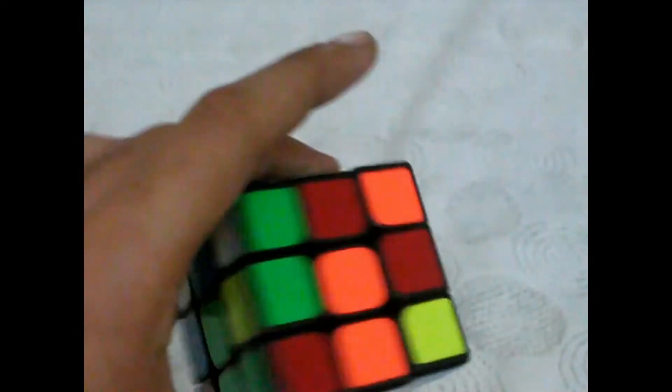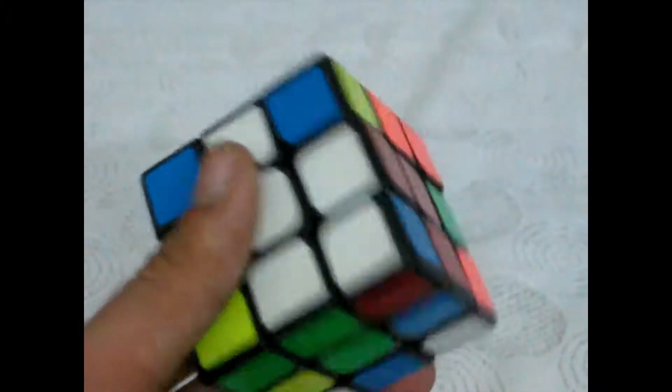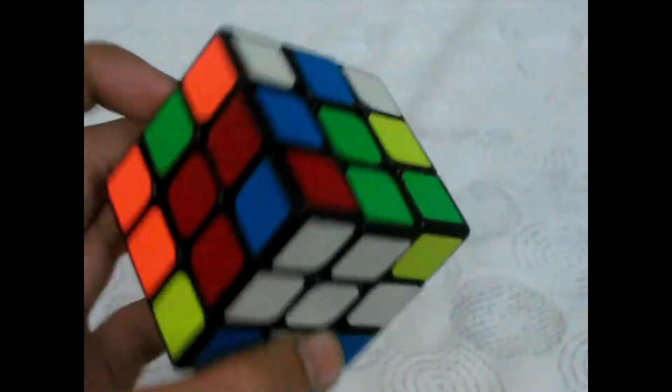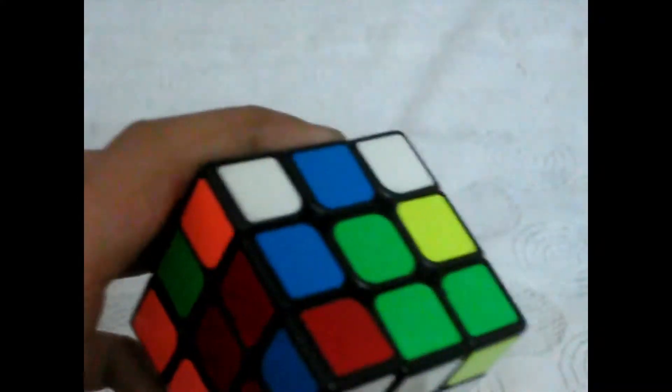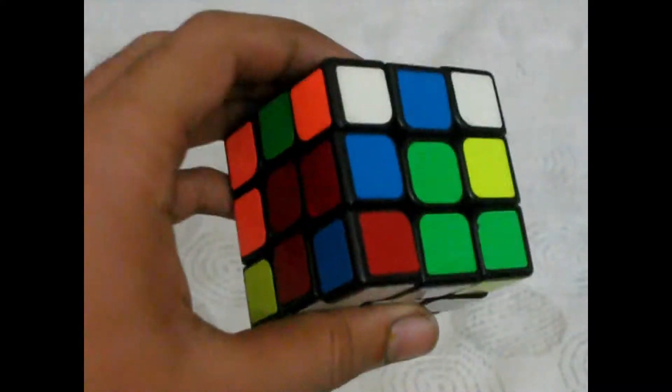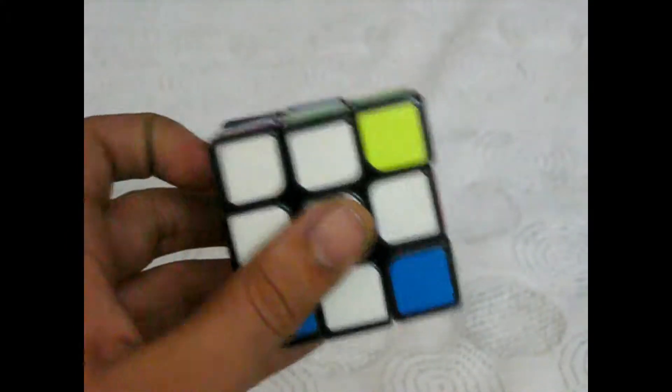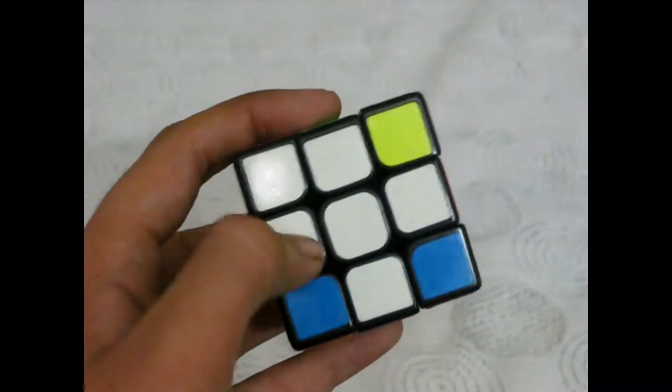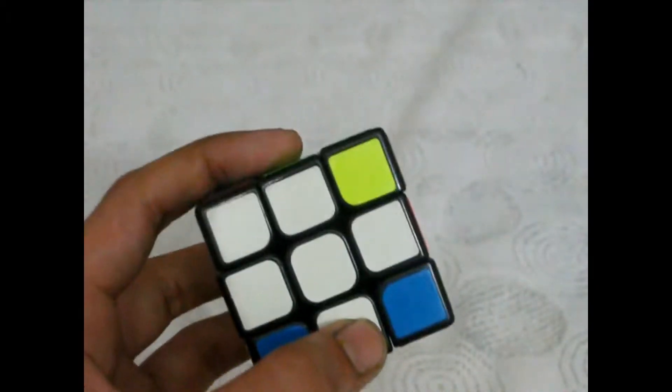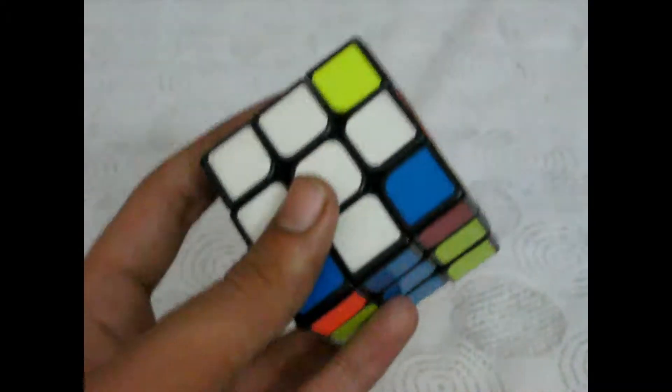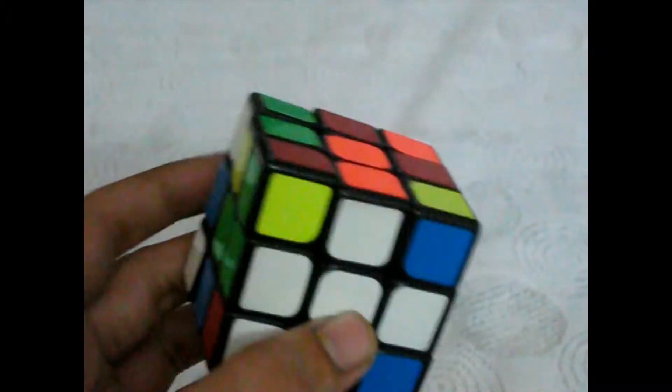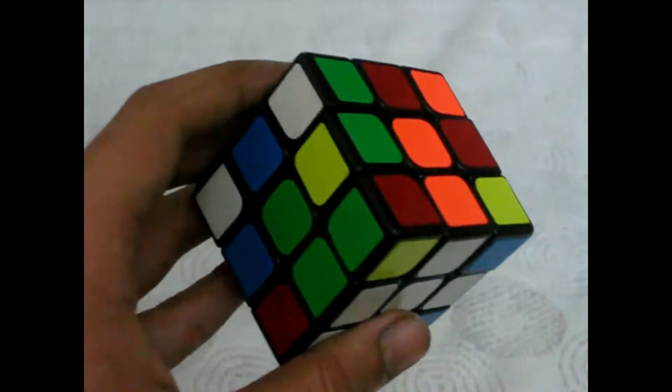Okay, so now our cross is made and accidentally I have placed all the edges at the right places, but there are two cases when the edges are swapped. The first case is when the adjacent edges are swapped, and the second case is when the parallel edges are swapped. So I will just make both those cases and then I'll show you how to solve them.